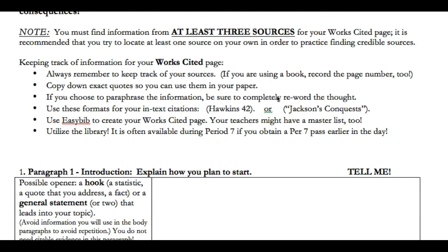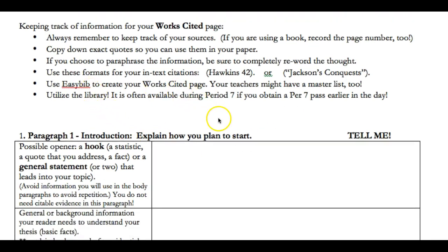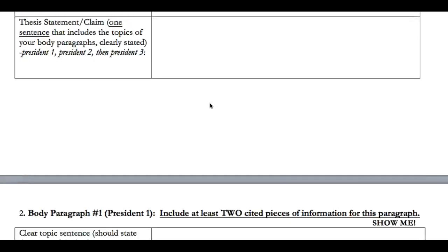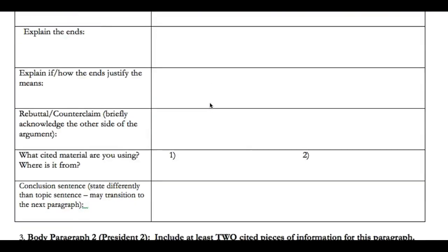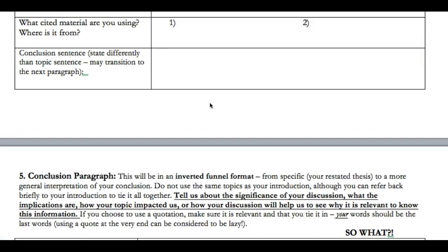Note that you need to use at least three sources. You were told on Friday how many of those sources you needed to find on your own — that varied for people — but essentially you are choosing at least three sources. Hopefully you had some success finding your own sources. Don't forget that you could use EasyBib to work on your Works Cited.